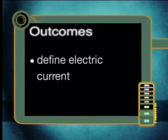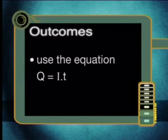We will revise these key concepts and then we will try a fun quiz just to make sure that everything you have learnt is absolutely sound in your knowledge. By the end of this lesson, you should be able to define electric current and use the equation Q is equal to I times T.